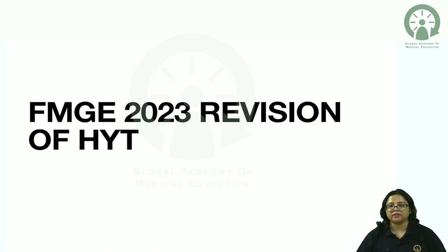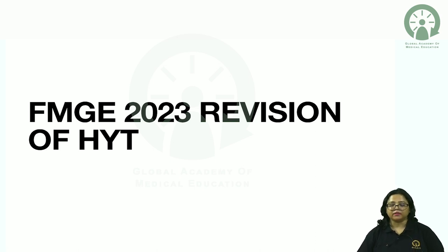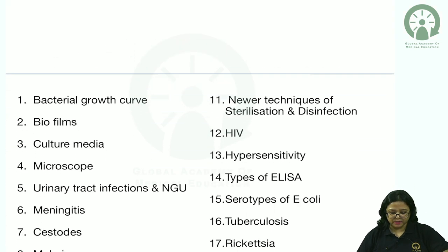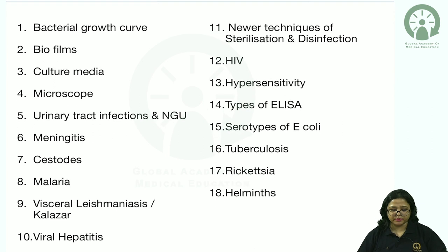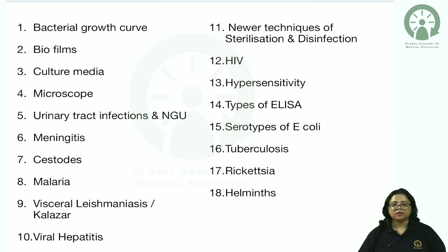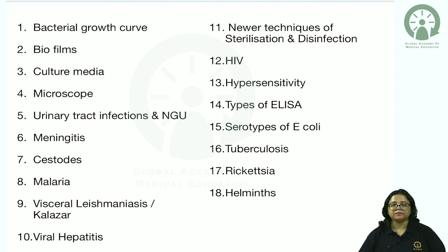In order to cover the subject comprehensively, we are going to discuss 18 major topics that have been asked or are probable questions that may be asked in the upcoming FMG examination. We will begin with bacterial growth curve and also discuss about biofilms.